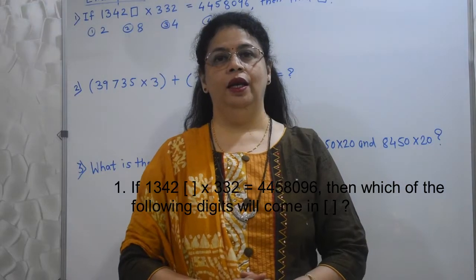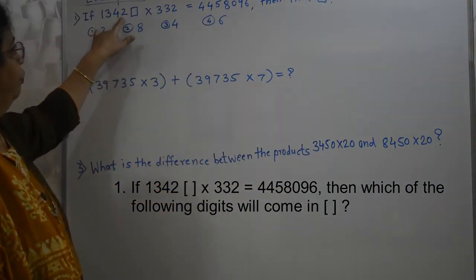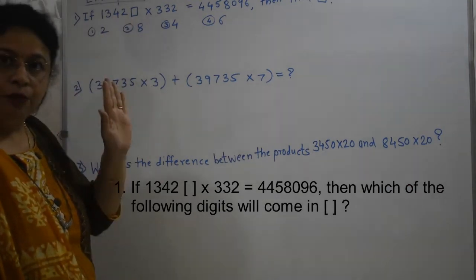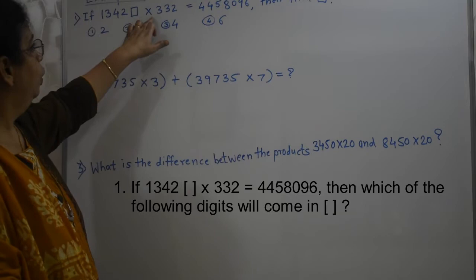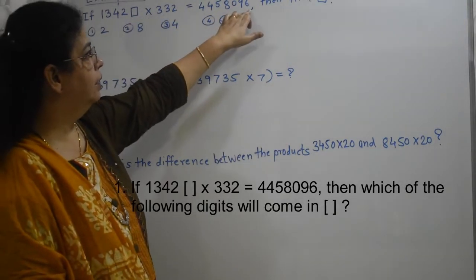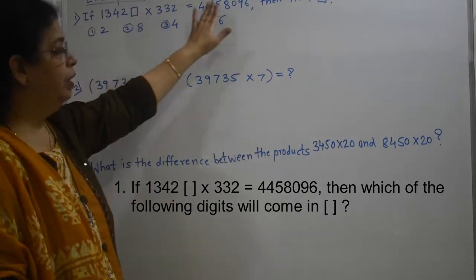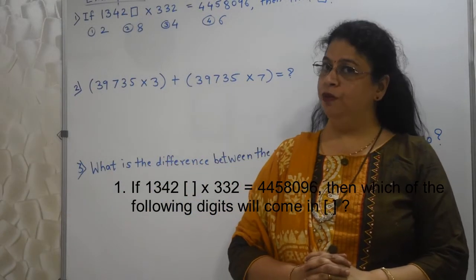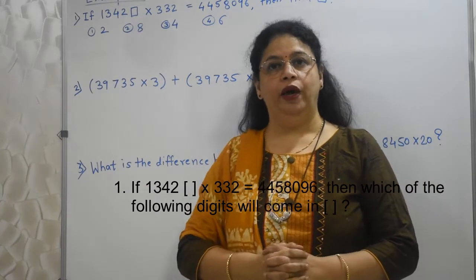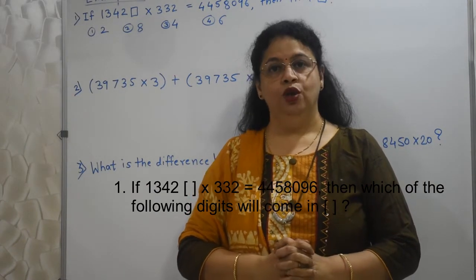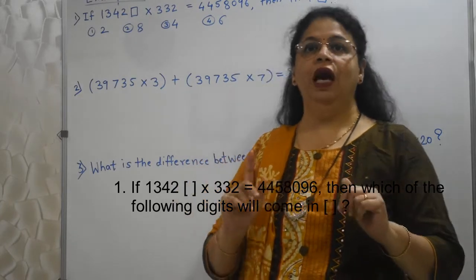Friends, let us begin with few examples. See here. If 1, 3, 4, 2 box into 3, 3, 2 is equal to 4, 4, 5, 8, 0, 9, 6, then find box. Which number will be there in the box so that this multiplication is true. If you observe, this place is the units place. In short, we need to find out the digit which will be there in the units place. So units place will help us to find out the units place.